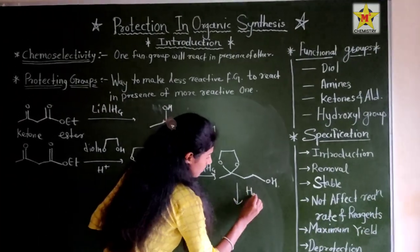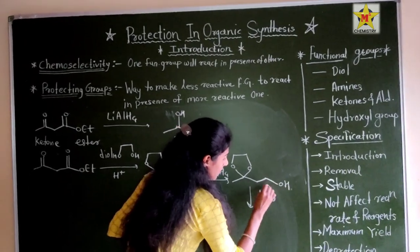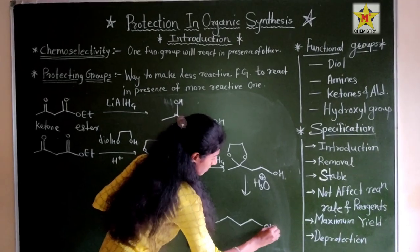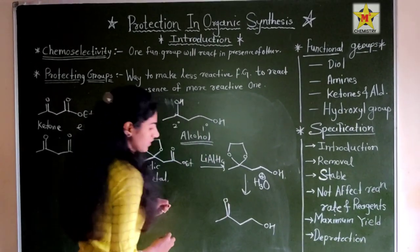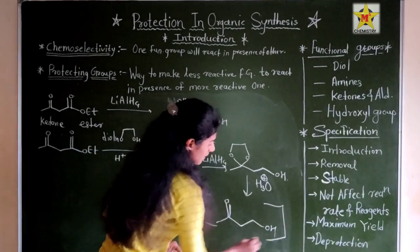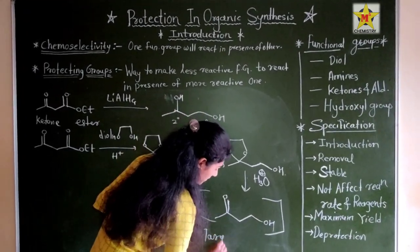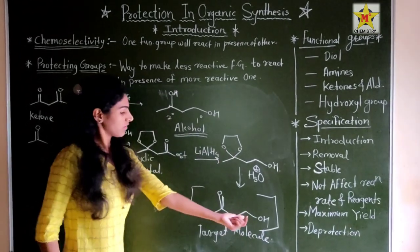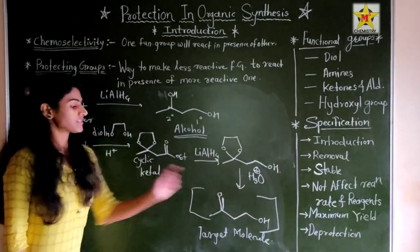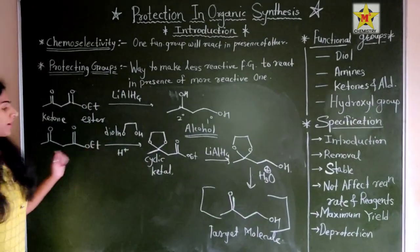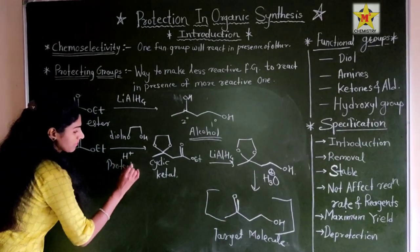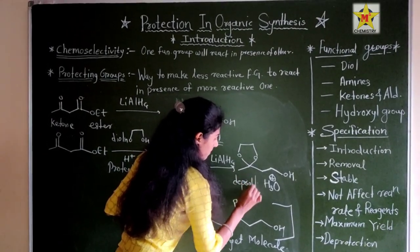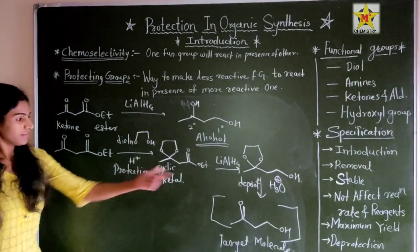For deprotection, the cyclic acetal is removed under aqueous acidic conditions, and the ketone group is regenerated. This gives us our target molecule — where only the ester has been reduced. Here, protection was the first step followed by deprotection.